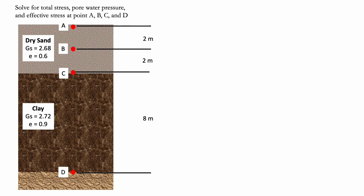We have here a soil profile and we are asked to solve for total stress, pore water pressure, and effective stress at points A, B, C, and D. We have dry sand with a specific gravity equal to 2.68 and a void ratio of 0.6, and clay with a specific gravity equal to 2.72 and void ratio of 0.9.